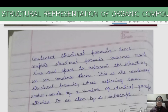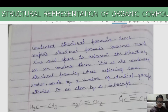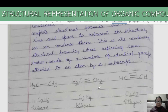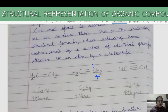Next is the condensed structural formula. Since the complete structural formula consumes much time and space to represent the structure, we can condense it. In the condensed structural formula, we replace some dash bonds by indicating a number of identical groups attached to an atom by a subscript. For example, if two hydrogen atoms are attached to a carbon, we write it as CH2 using a subscript.